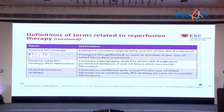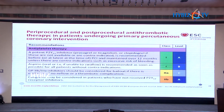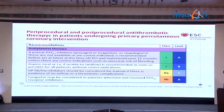Primary PCI strategy: emergency coronary angiography and PCI of the infarct-related artery is indicated. Rescue PCI: emergency PCI performed as soon as possible in case of failed fibrinolysis. Routine early PCI after fibrinolysis: coronary angiography with PCI of IRA performed between 2 and 24 hours of successful fibrinolysis. For DAPT: a potent P2Y12 inhibitor — prasugrel or ticagrelor, or clopidogrel if these are unavailable or contraindicated — is recommended before or at the time of PCI, maintained over 12 months unless excessive bleeding risk exists. Class I, Level of Evidence A.